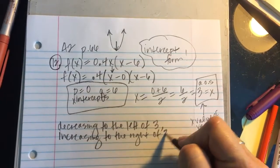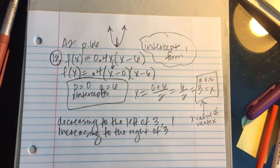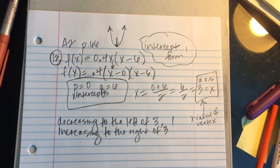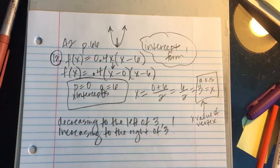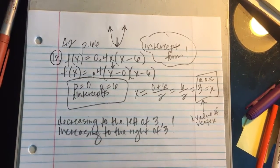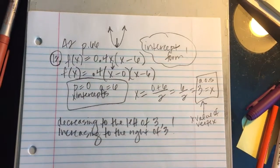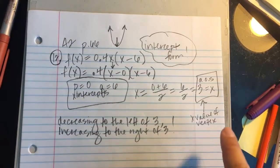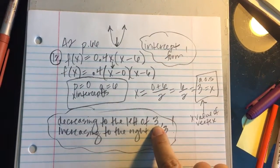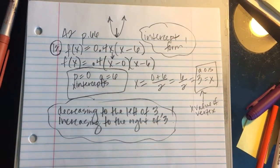In our notes, we have the whole increasing, decreasing, and vertex stuff falling under standard form, but the exact same thing is going on with decreasing and increasing. You just need the x value of the vertex or what that axis of symmetry x is. That was all for number 12. Intercepts and what's it doing, and I'm looking for decreasing to the left of 3, increasing to the right of 3.